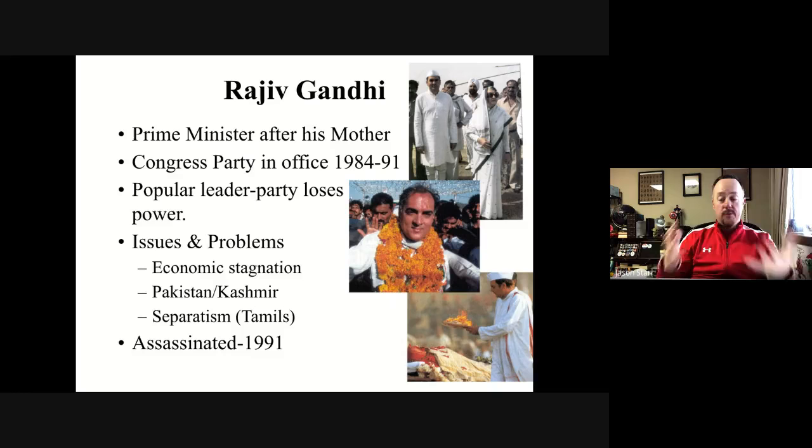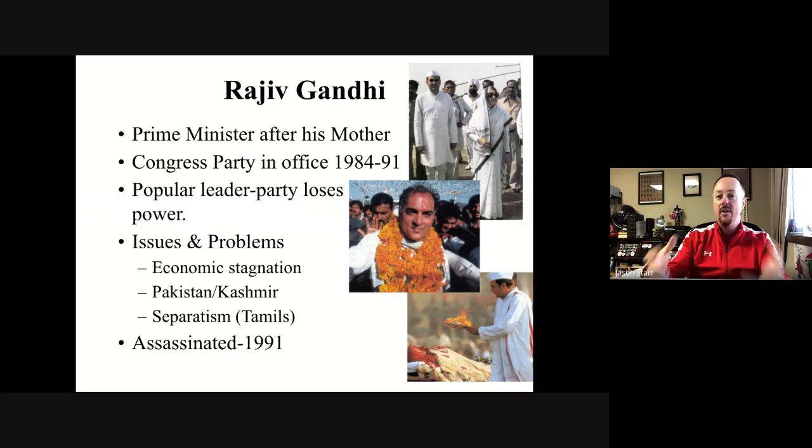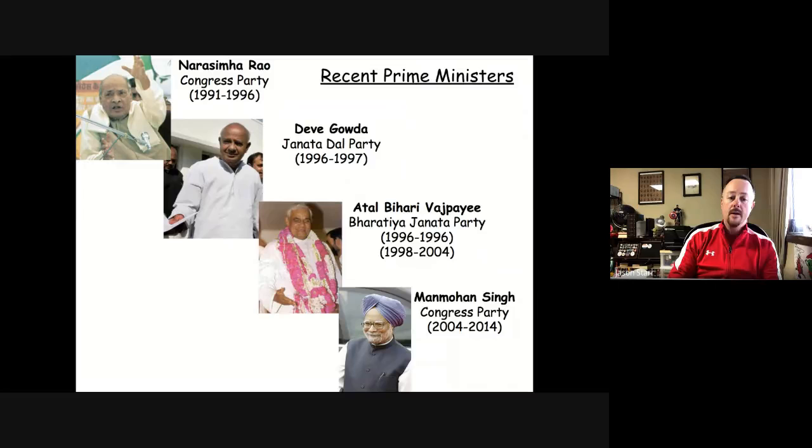Just like his mother, Rajiv Gandhi was assassinated — in 1991. His family is similar to the Kennedy family in the United States: very active in politics, holding very high offices, but with multiple members having been assassinated.